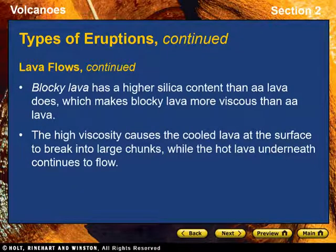Blocky lava has a higher silica content than aa lava, and this makes blocky lava more viscous than aa lava. The high viscosity causes the cooled lava at the surface to break into large chunks while the hot lava underneath continues to flow. This process gives the lava flow a blocky appearance.